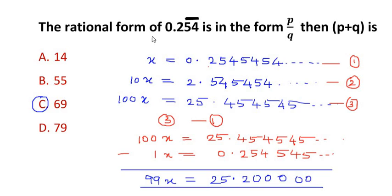So this is how we have to change the recurring decimal into a form of a fraction, and once we get it as a form of fraction, then add the numerator and denominator to get the required answer. I hope you have understood all the steps. Like the video and thank you for watching.